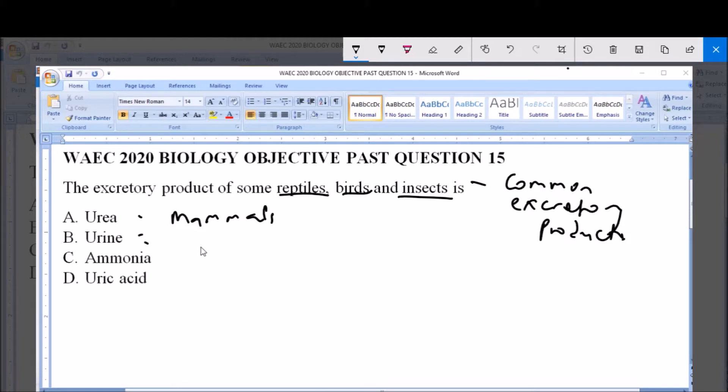Ammonia is excreted by the flatworms mostly.